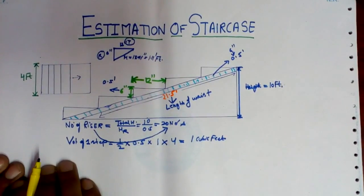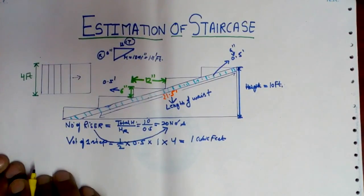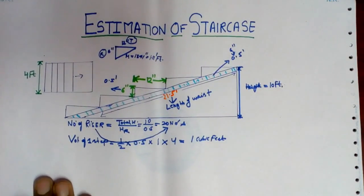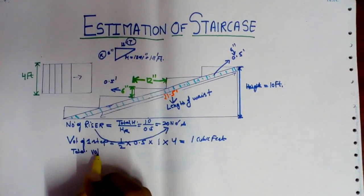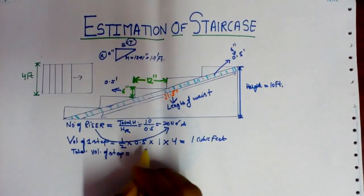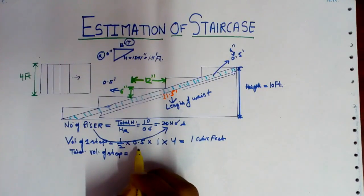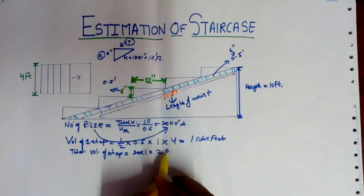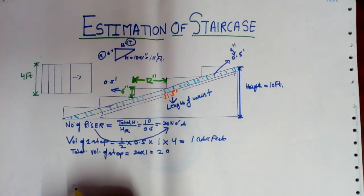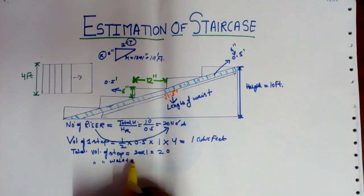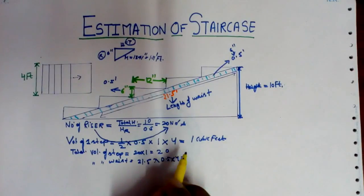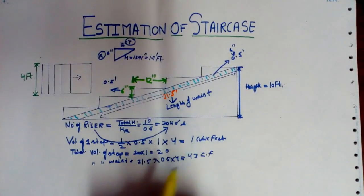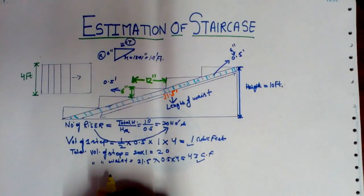Now the total volume of steps will be 20 into 1, which is 20 cubic feet. The volume of the waist slab will be 21.5 × 0.5 × 4 = 43 cubic feet.